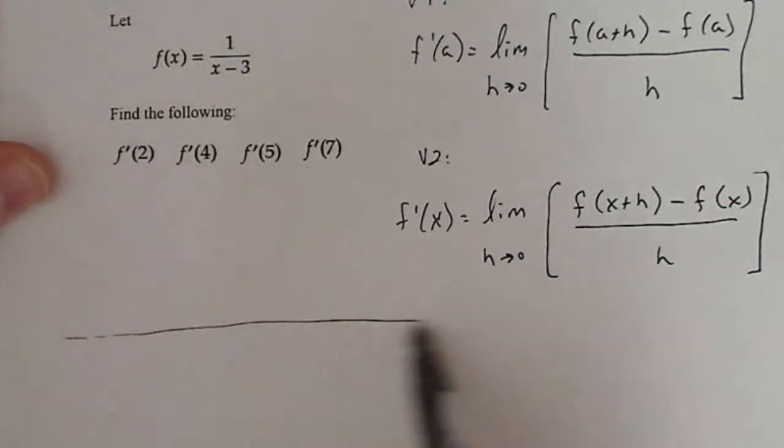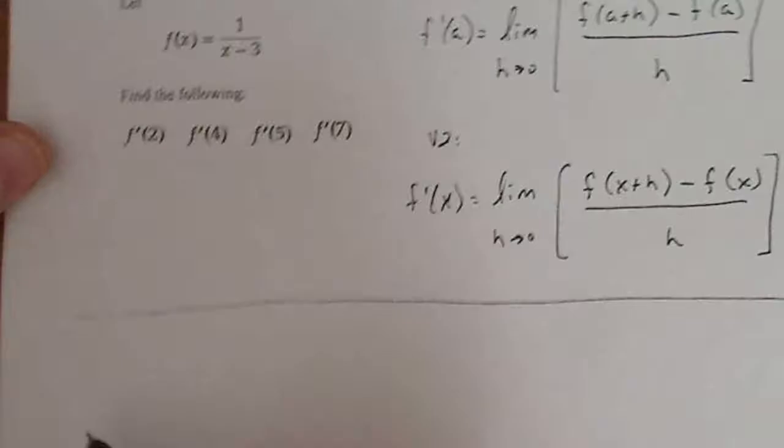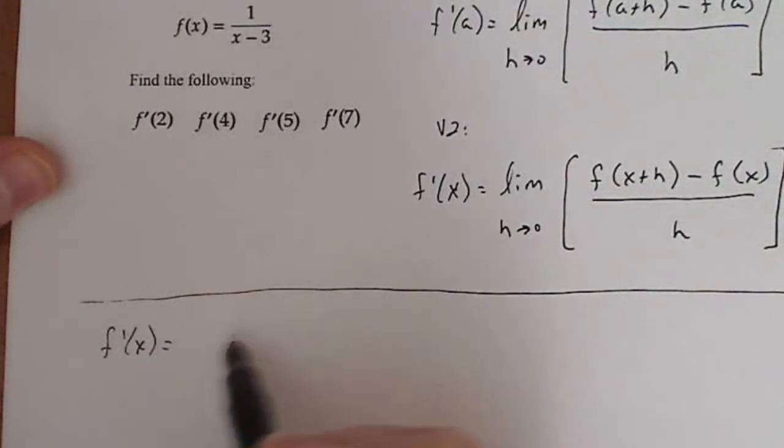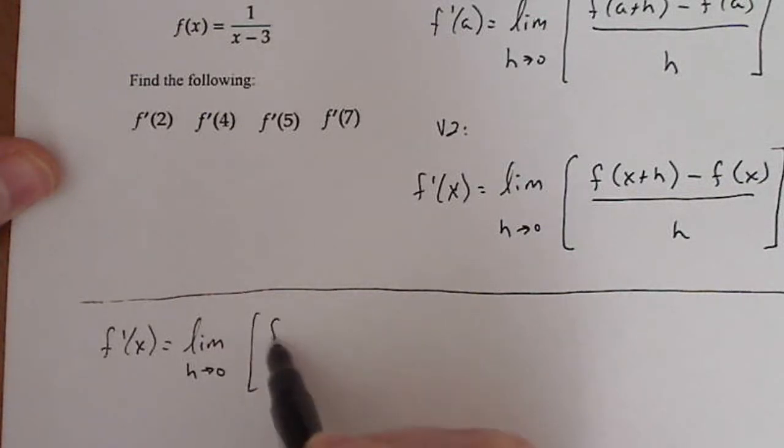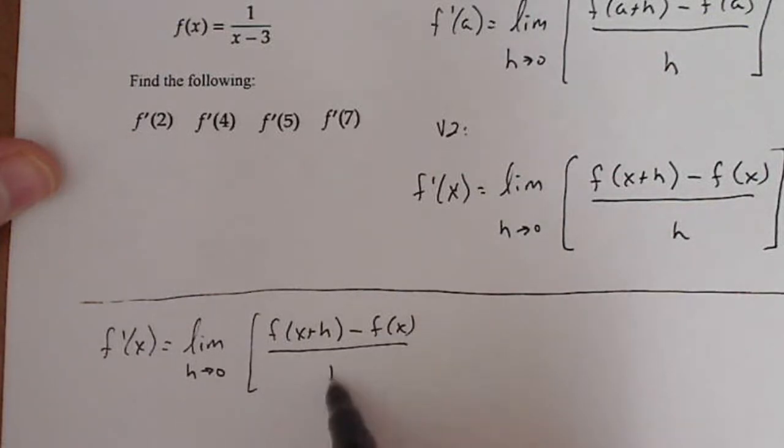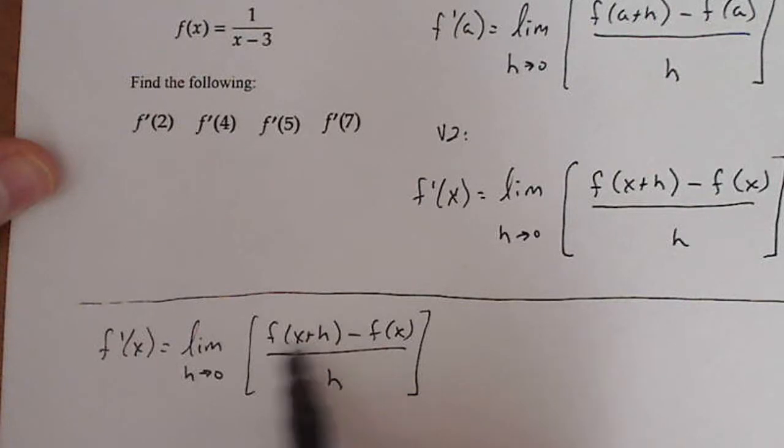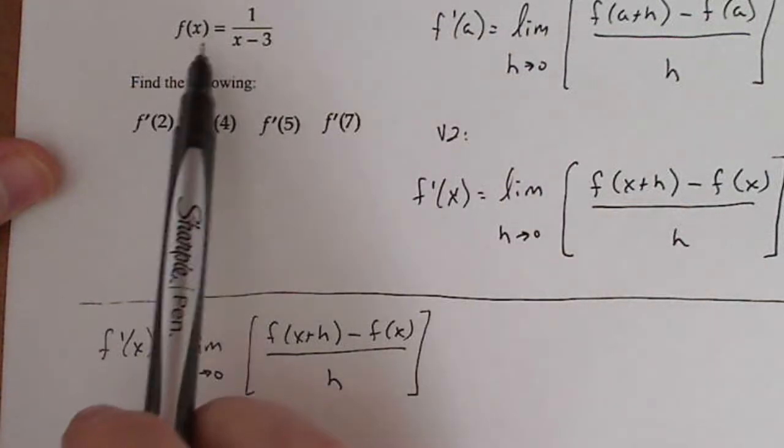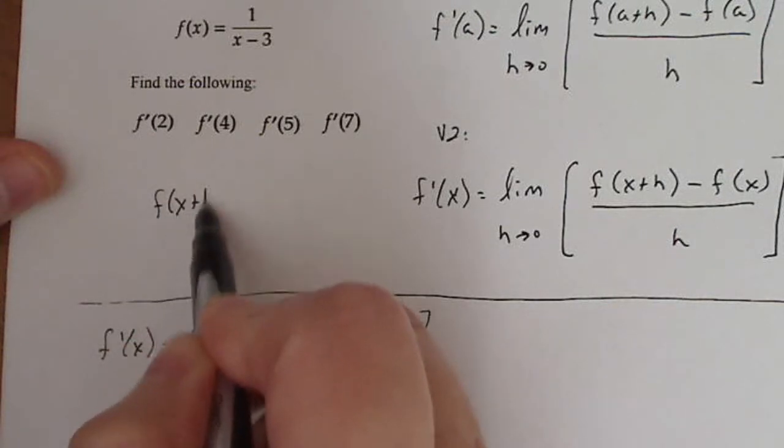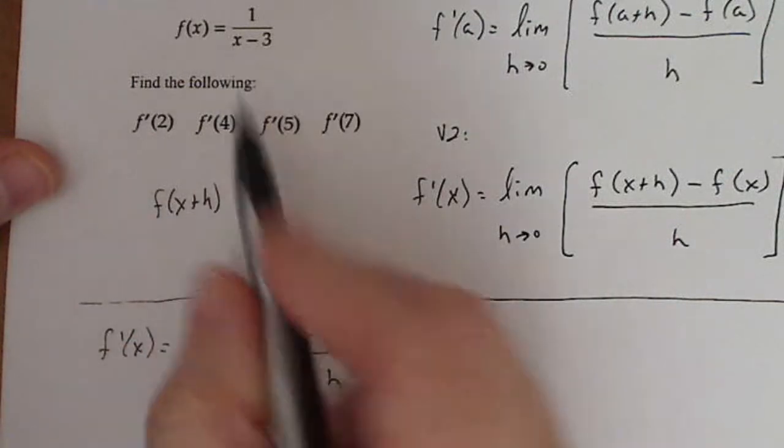So let us work down here. So I'm going to start out with using this guy, f prime of x equals a limit as h goes to zero, f of x plus h minus f of x all over h. Now I see I need f of x plus h, f of x and h, three pieces of that inside part of my limit. Here I have f of x already, f of x plus h, I'm going to substitute in for x, x plus h.